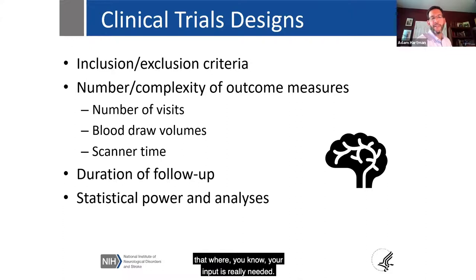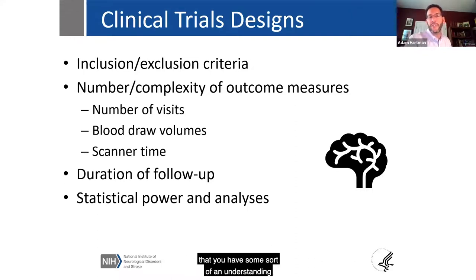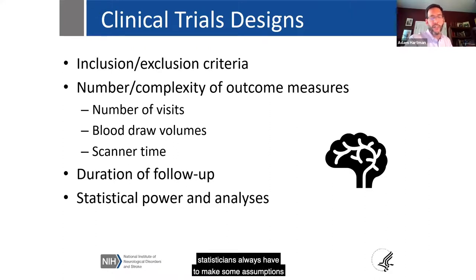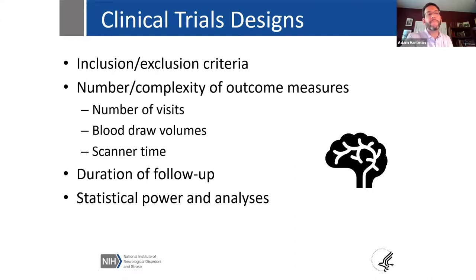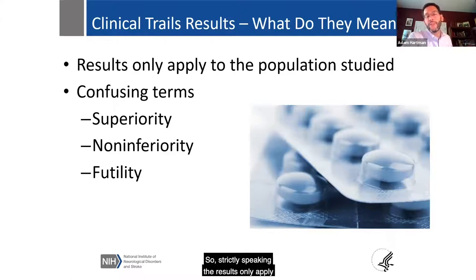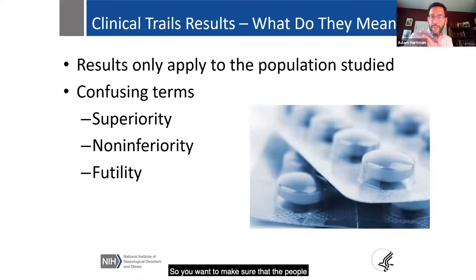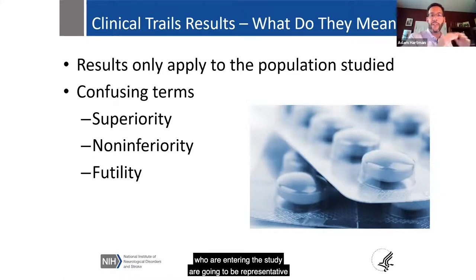What do the results mean? Strictly speaking, results only apply to the population studied. You want to make sure that the people entering the study are representative enough of the broader population that it will be a meaningful result. There are some terms you may see in the literature: superiority, non-inferiority, and futility.